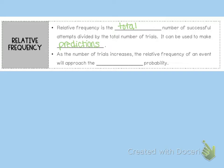We're talking about total number of successful attempts divided by total number of trials. So as the number of trials increases, the relative frequency of an event will approach the theoretical probability. The more times that we trial this or experiment this, the closer to the theoretical probability we will get.